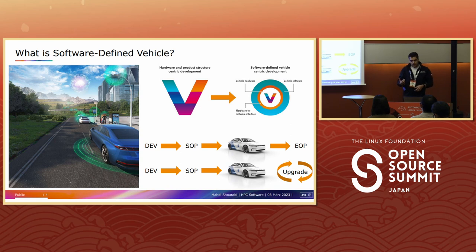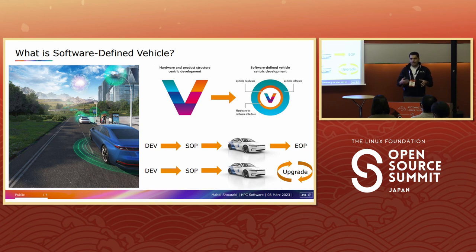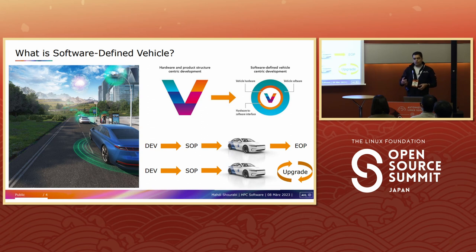With software defined vehicle, the development cycle is different: after development and after start of production, the development cycle does not end. It continues as long as the hardware is capable of receiving new upgrades, and the vehicle can gain new features through software. So software has a continuous role after start of production. In the traditional way we had a V-cycle, a one-time development, but with SDV a new layer of processes should wrap around this V-cycle to allow for continuous development after start of production.